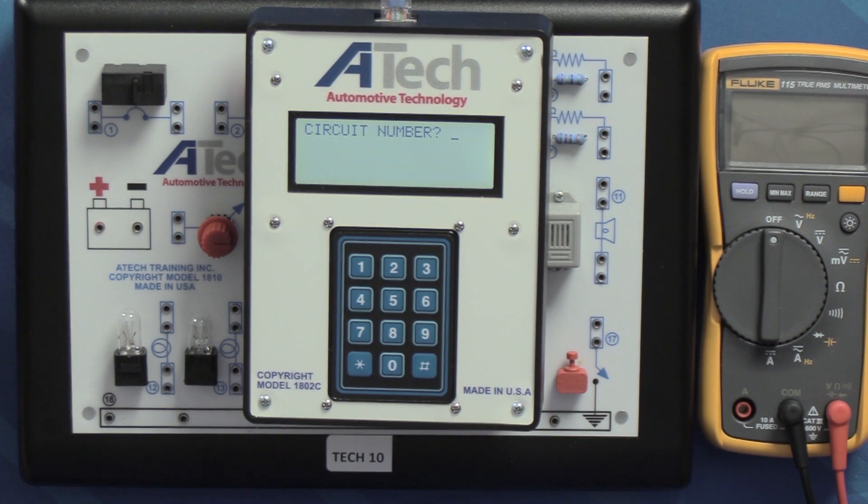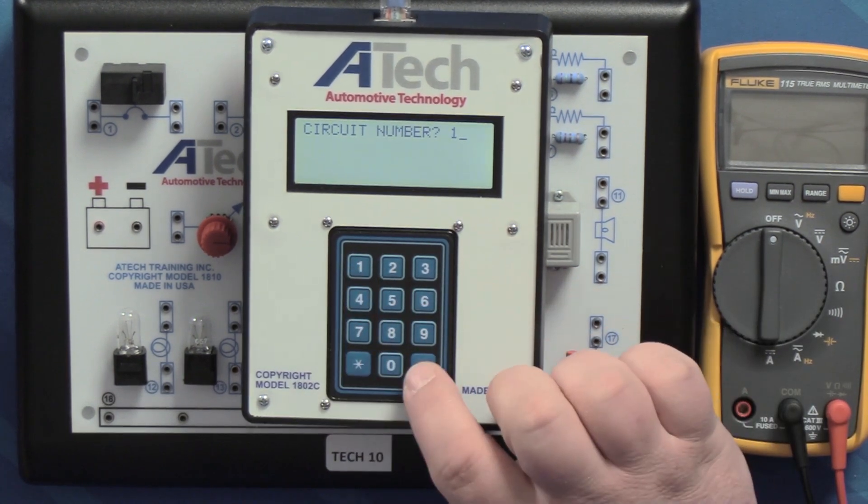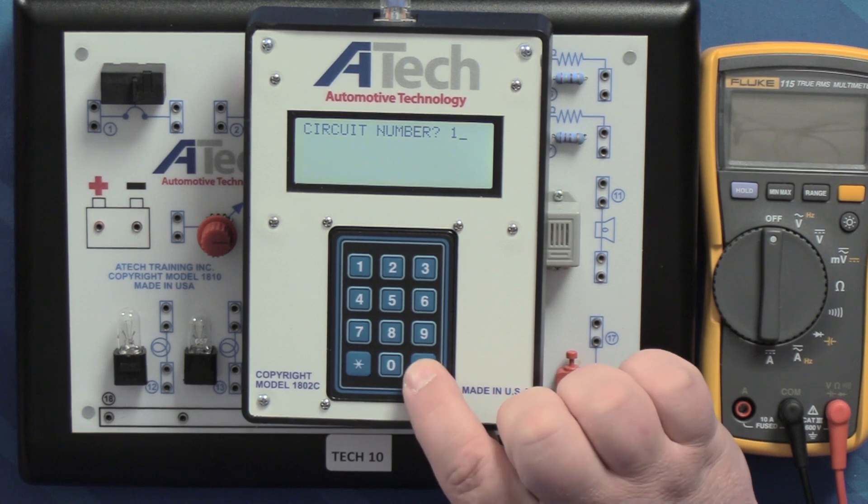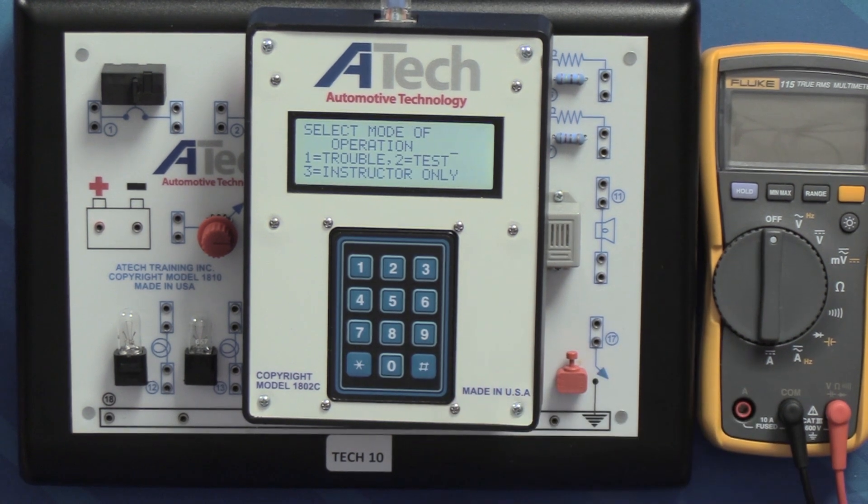When your students are utilizing the 1810 trainer without the computer-based instruction, you will be using provided courseware that's going to walk students through certain activities, and at the end of that activity it will prompt them with a circuit number to input. So for today we're just going to punch in circuit one and then to move forward you always hit the pound key, and then from here you're going to get several different modes of operation.